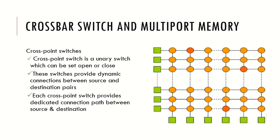In the pictorial representation of a crossbar switch, on one side you have the memory modules and on the other side the processing elements. Between each memory module and processing element pair there is a crossbar switch that enables the connection between them. This switch has two states: open or closed. Whenever there is a data transmission between memory and a processing element, the corresponding unary switch goes to the closed state and data is transmitted; otherwise it remains open.